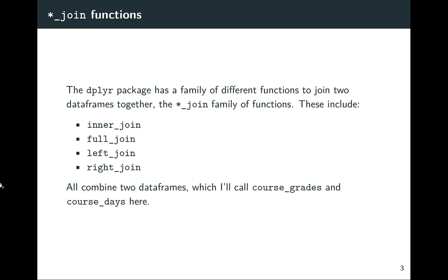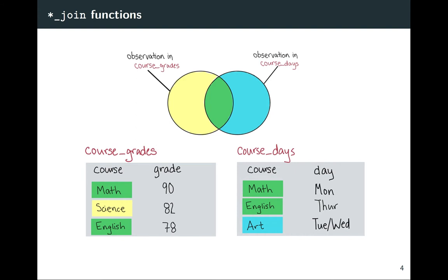Let's get through this family of functions. We have inner_join, full_join, left_join, and right_join. To think about the differences between these, let's consider where you might have common and missing data. I've created two toy example data frames giving courses and grades, and courses and days. In this case, we might want to merge these two based on the course column — that's the column we have in common across the two.